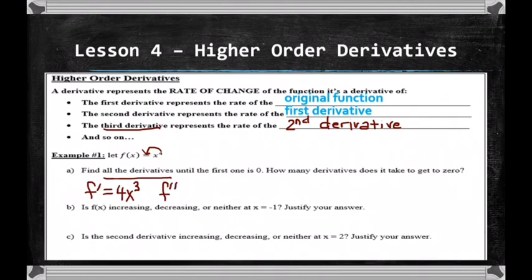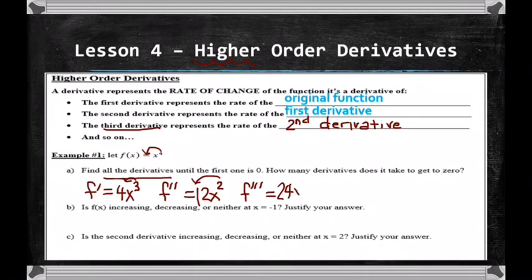The second derivative — which is a higher order, meaning more than 1 — you bring the 3 down: 3 times 4 is 12, and subtract 1 from the power, you get x squared. Then the third derivative: you bring the 2 down, so 2 times 12 is 24x. You don't need to write the exponent of 1. Bring the power down, multiply, and subtract 1 from the exponent — that's what the power rule tells us.